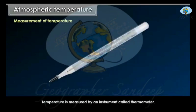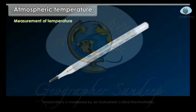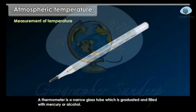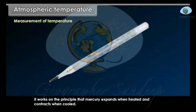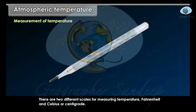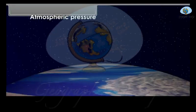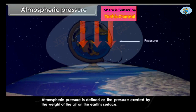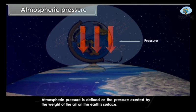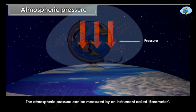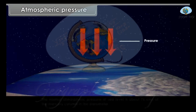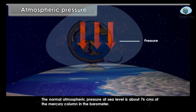Measurement of Temperature. Temperature is measured by an instrument called a thermometer. A thermometer is a narrow glass tube which is graduated and filled with mercury or alcohol. It works on the principle that mercury expands when heated and contracts when cooled. There are two different scales for measuring temperature: Fahrenheit and Celsius (or Centigrade). Atmospheric Pressure. Atmospheric pressure is defined as the pressure exerted by the weight of the air on the earth's surface. It can be measured by an instrument called a barometer. The normal atmospheric pressure at sea level is about 76 cm of the mercury column in the barometer.